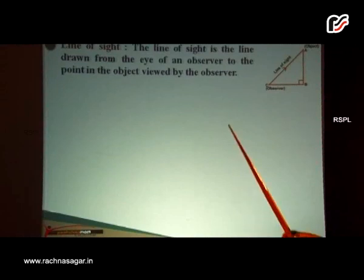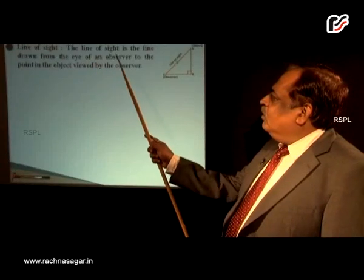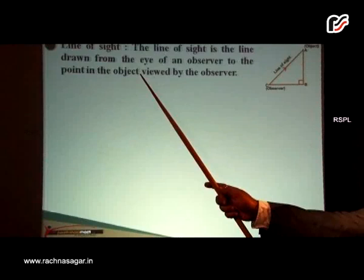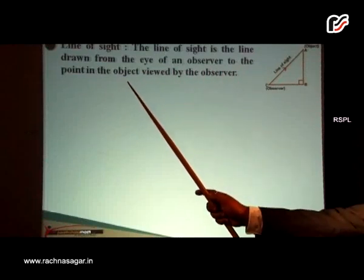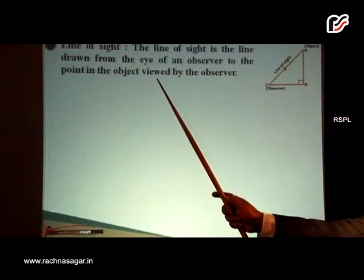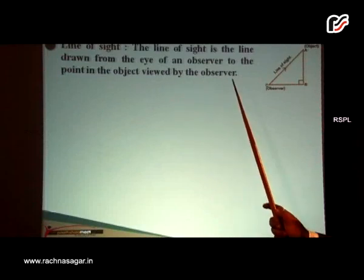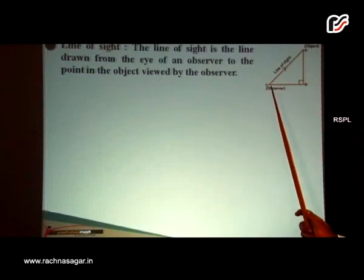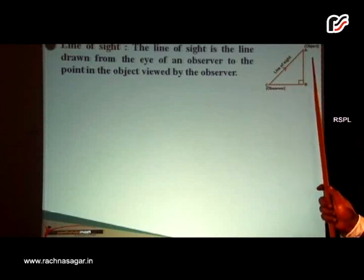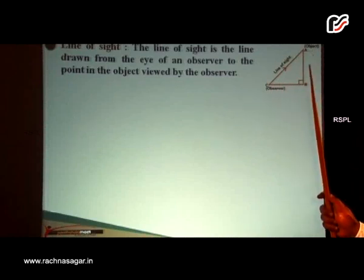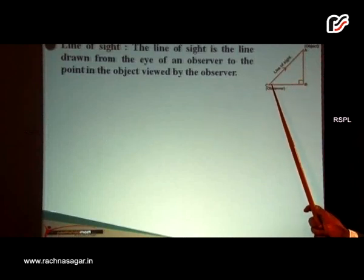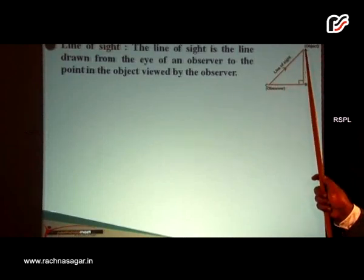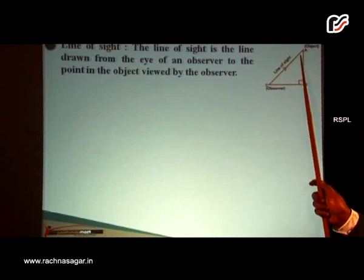The line of sight is the line drawn from the eye of an observer to the point in the object viewed by the observer. For example, if the observer is at C and the object to be viewed is at A, and BC is the horizontal, then the line joining C to A is known as the line of sight.